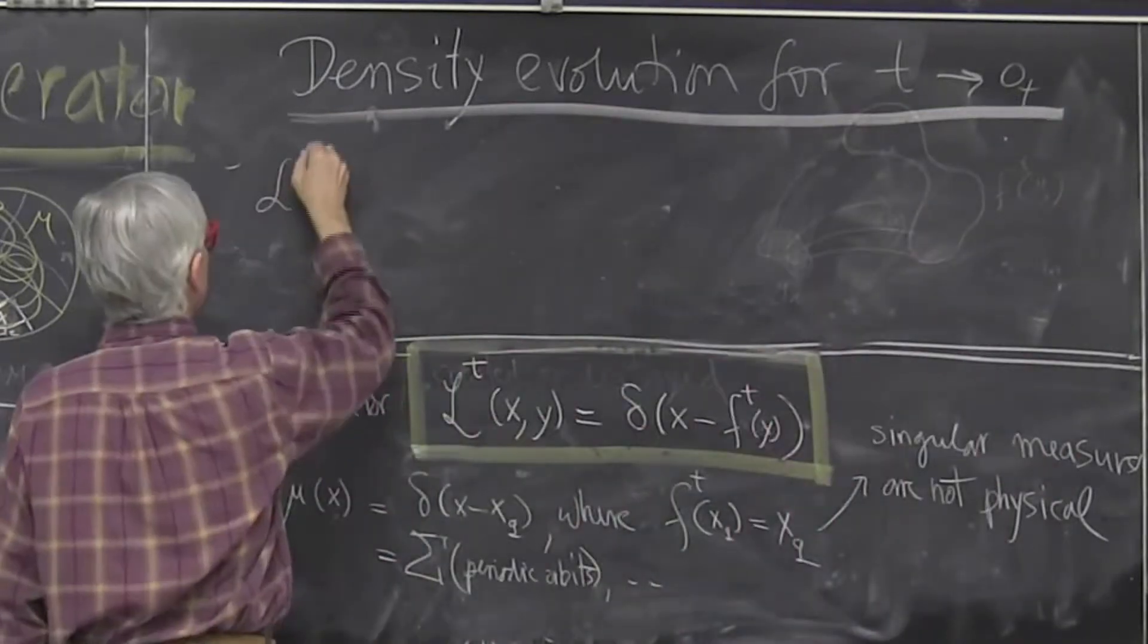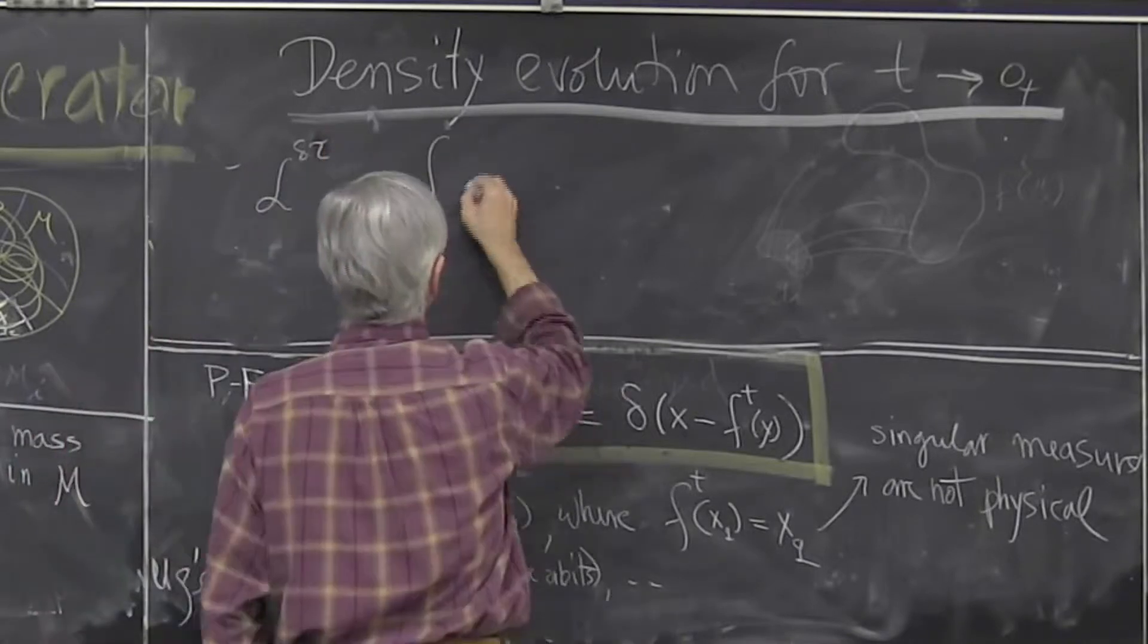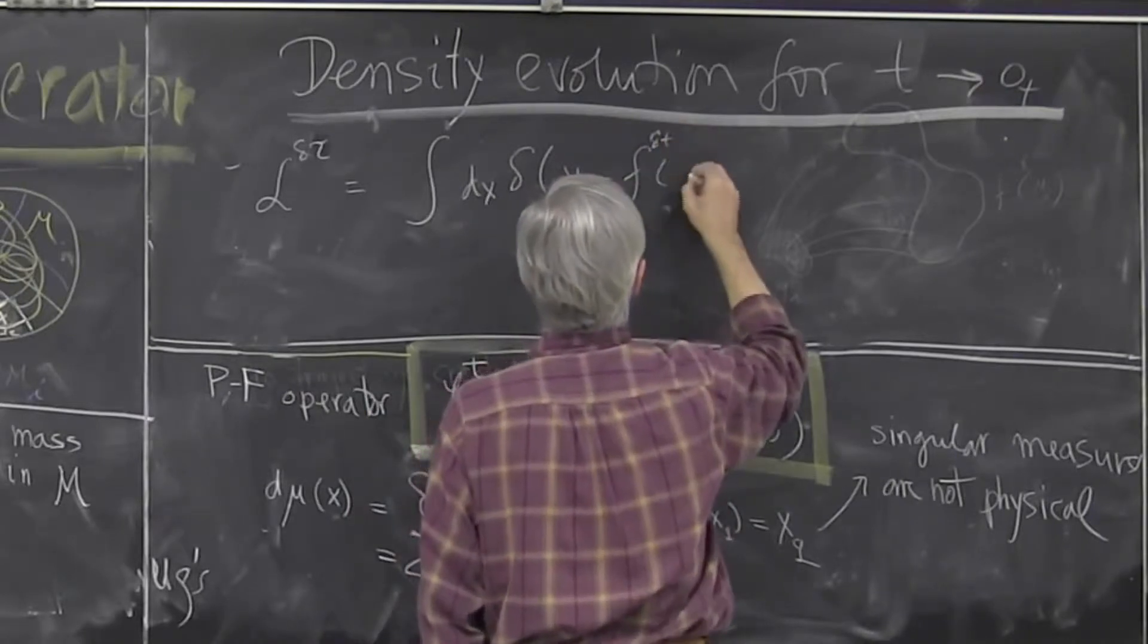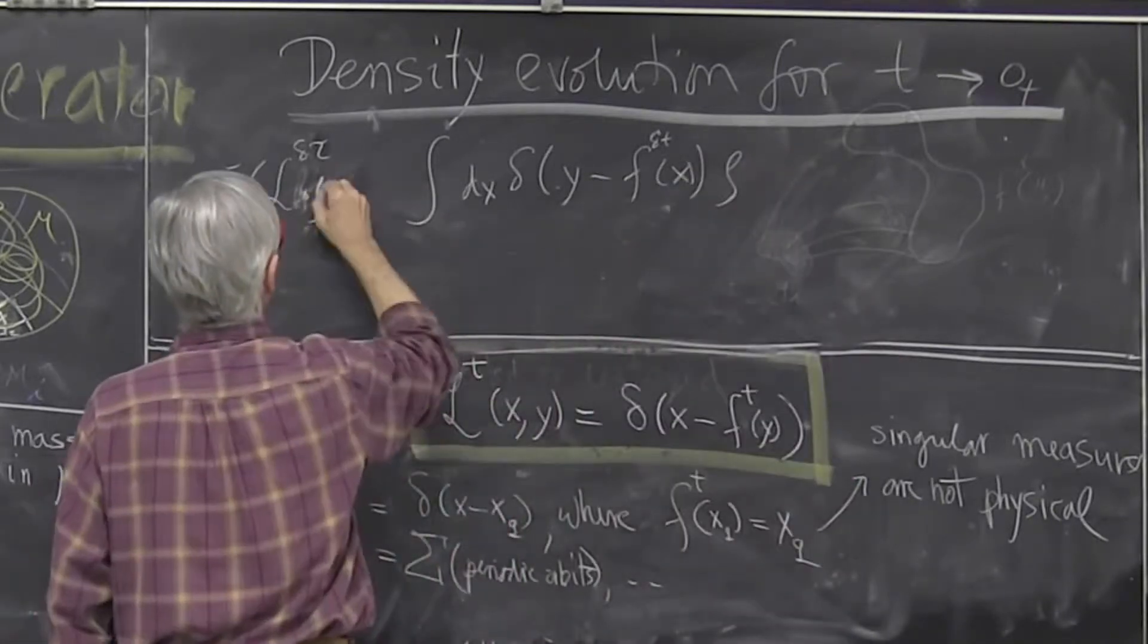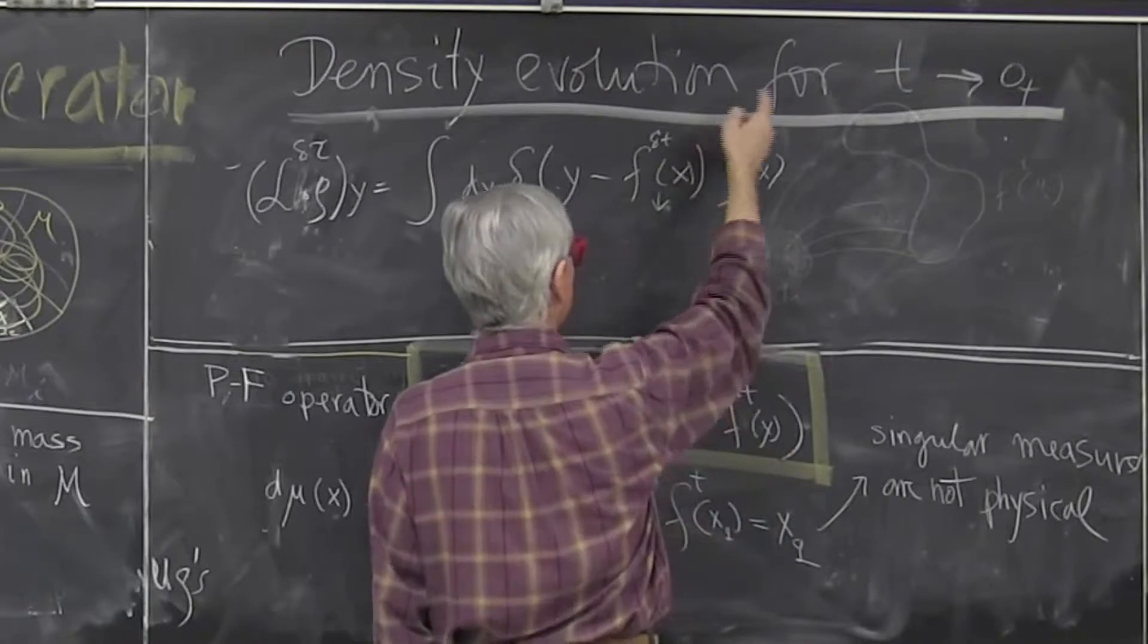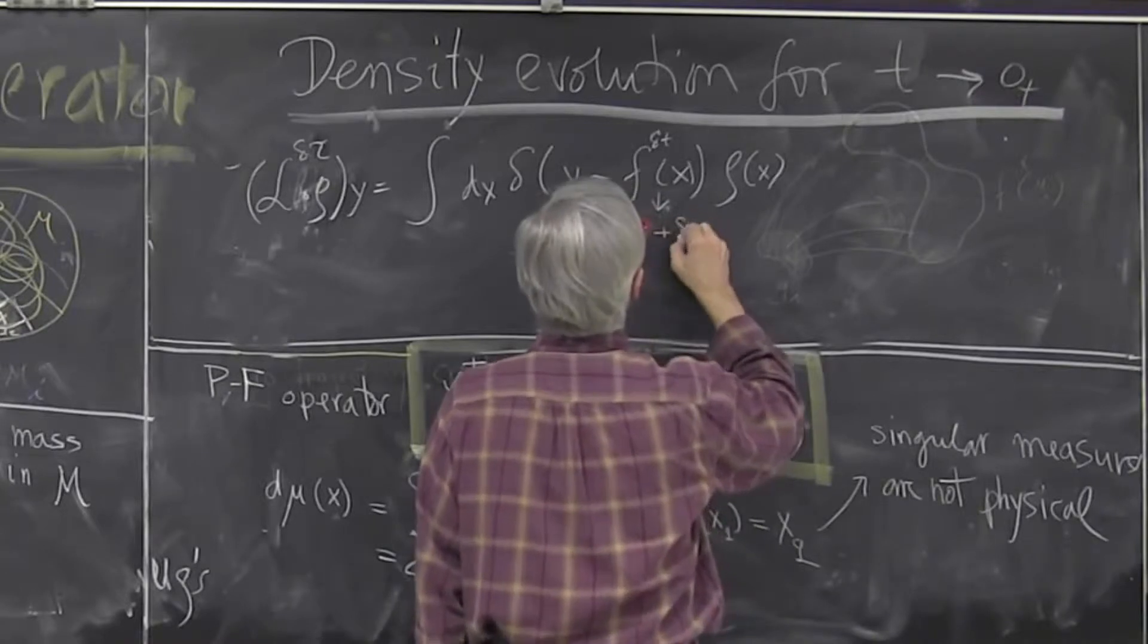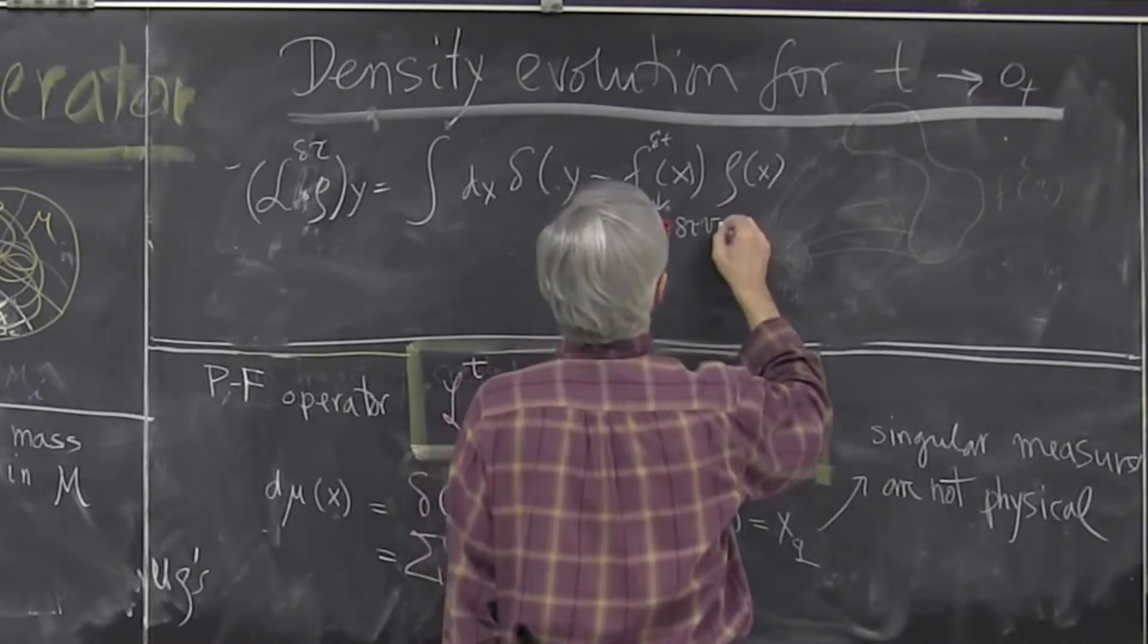So if you look at short time interval, I integrate delta y minus short time evolution. And we know what short time evolution looks like. This is evolution just integral over the velocity. So this is x plus delta tau velocity of x.